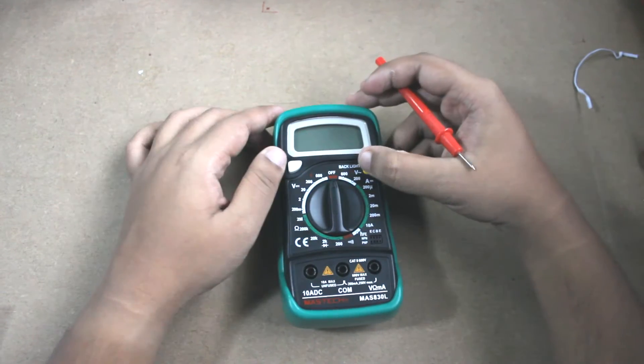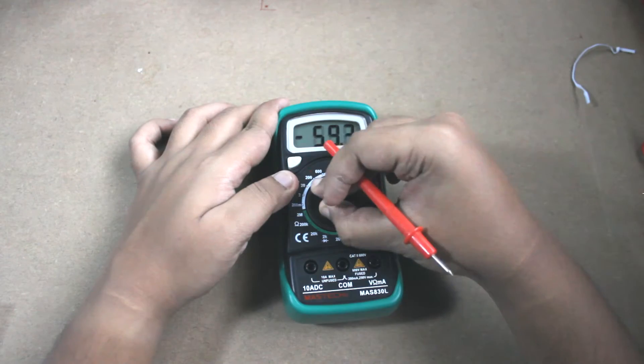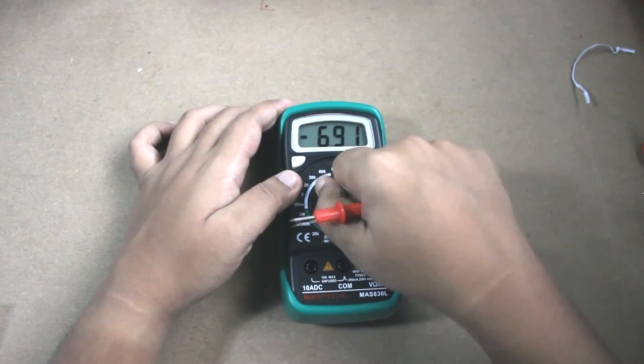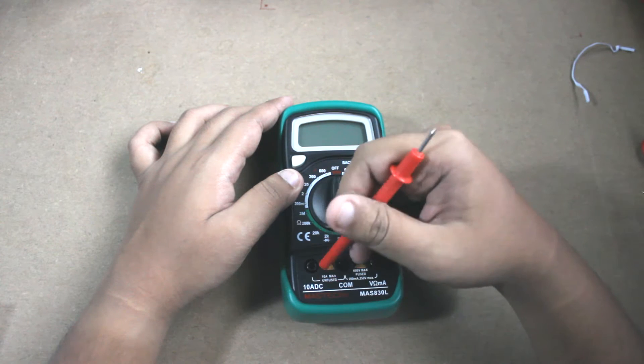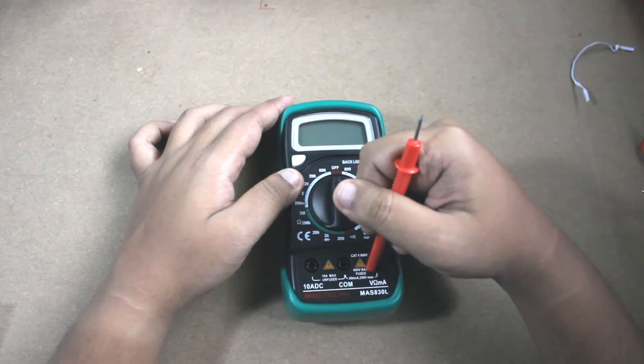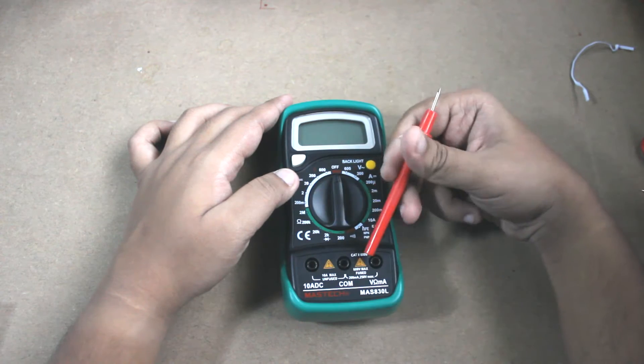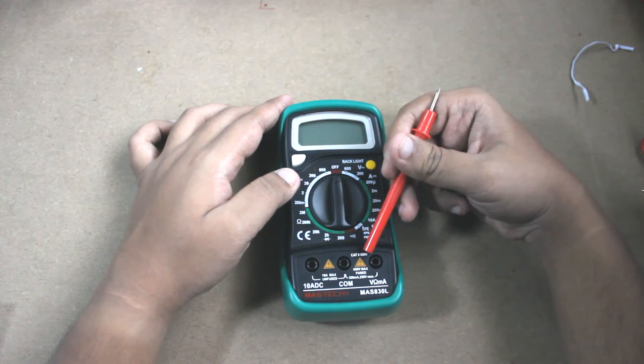This is the backlight button, hold button. The rotary switch looks steady. This is the common terminal, this is unfused for 10 amperes, this is fused to measure the voltage mainly. It is written here CAT 2 certified, 600 volts.